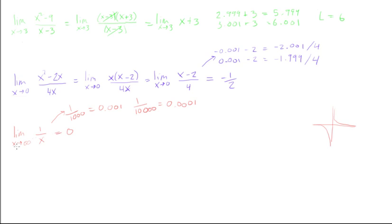Now the same thing, if we put as x goes to negative infinity of 1 over x, you can see too that if we put in 1 over negative 10,000, we would get negative 0.001. And if we put 1 over negative 10,000, we would get negative 0.0001. And you can see on the graph too that this would just get closer and closer to 0. So this would also be 0.